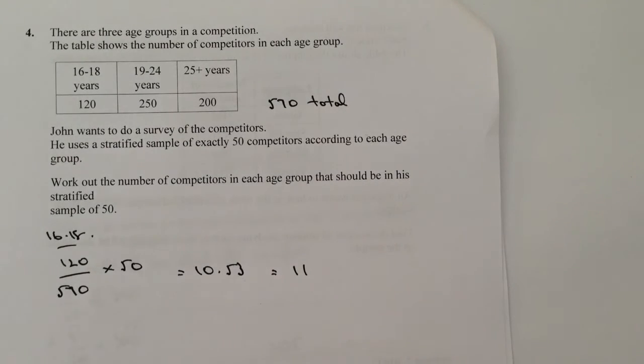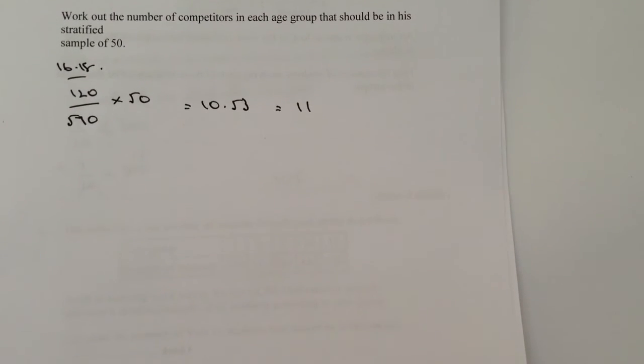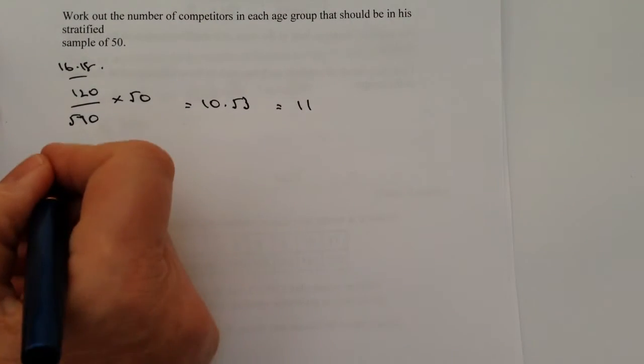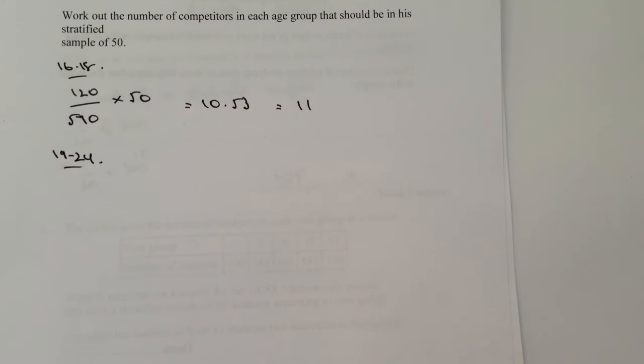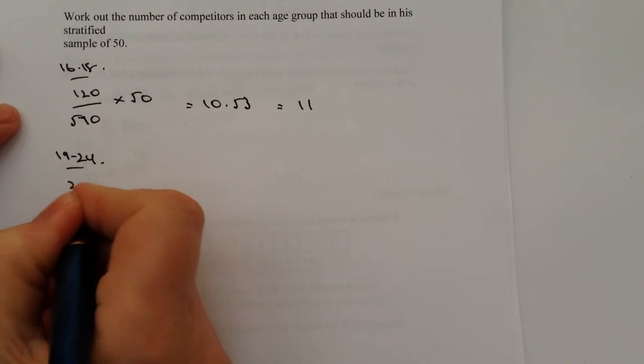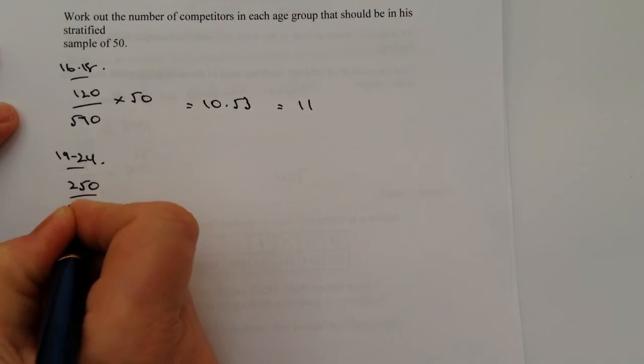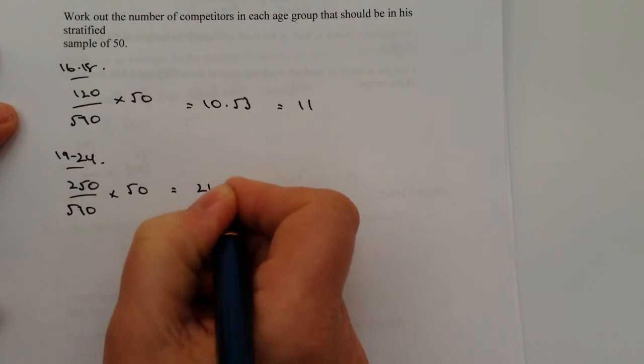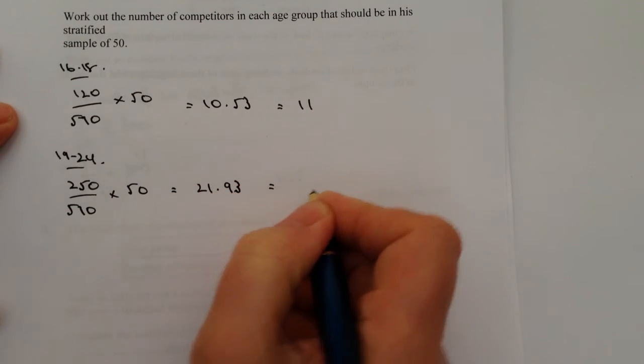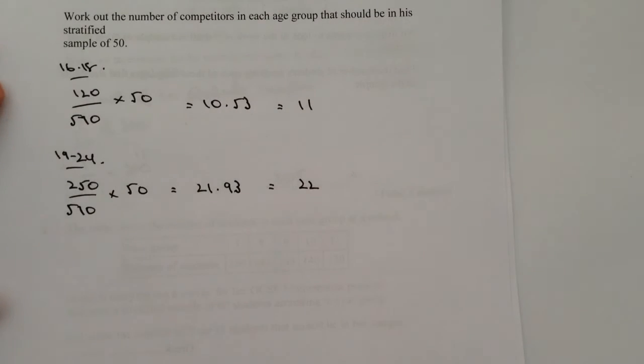We've got the 19 to 24 age group. If you can't see this on the screen, it might be useful to go to the website and download the question and work through it as I'm working through it. I've got 250 out of 570 multiplied by 50, and that's going to give me 21.93, which is 22.